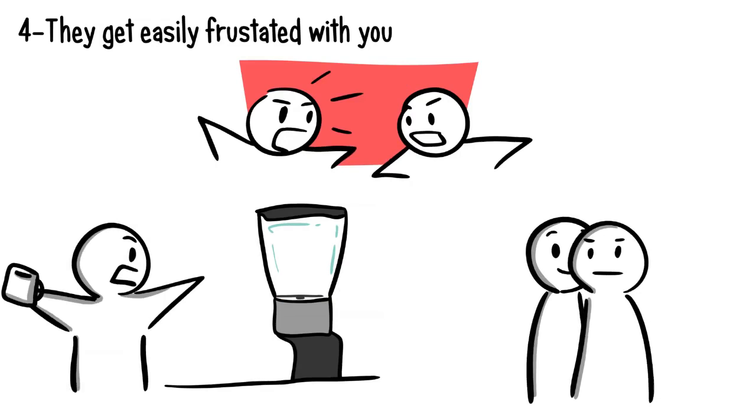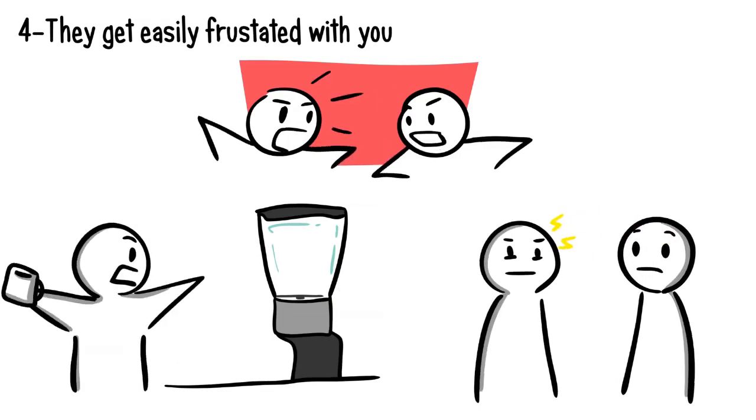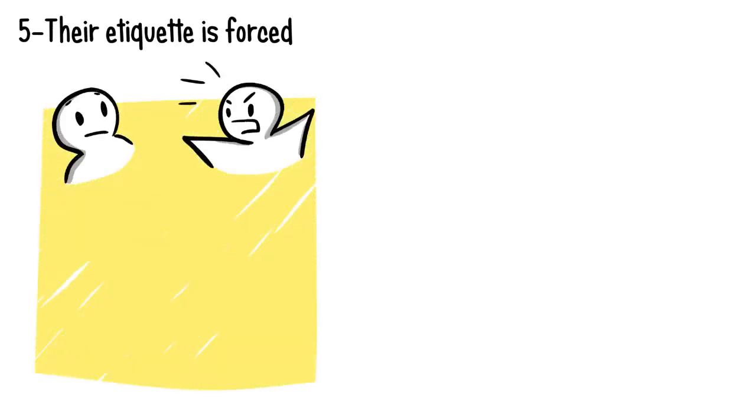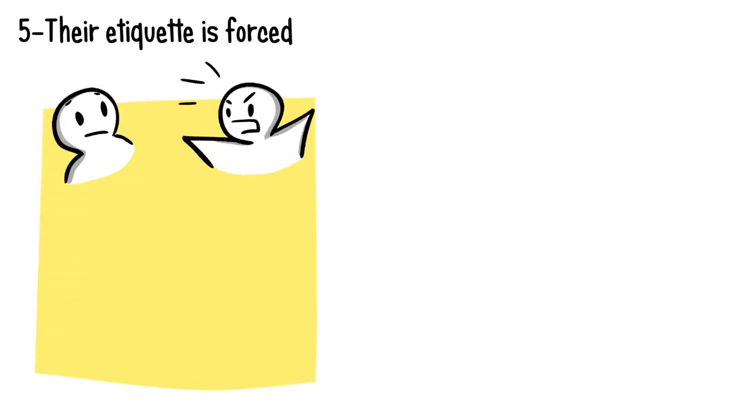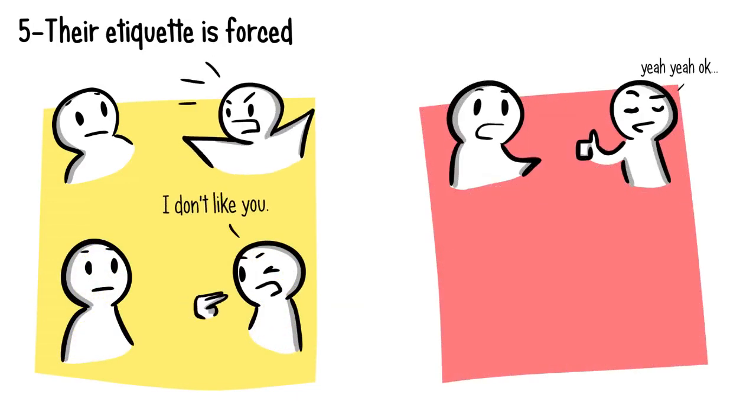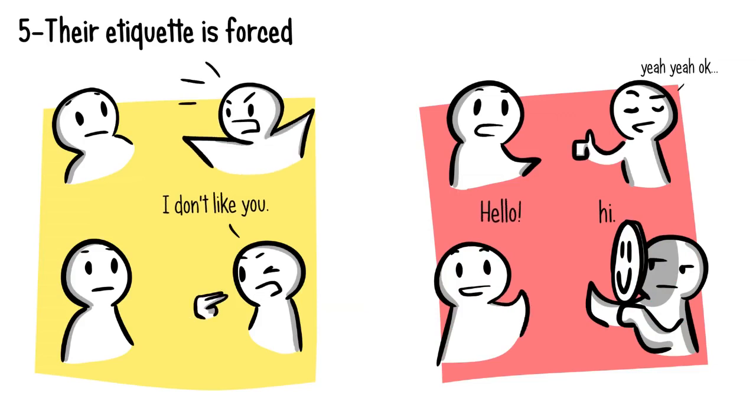Number five: their etiquette is forced. When someone outwardly dislikes you, they will be loud about it, whether it's lashing out on you regularly or telling you to your face. When they secretly dislike you however, they might try to get along just to avoid conflict. Whether it means forcing a smile or doing things to keep the peace, they will keep the surface clean between you two. Deep down though, they may think ill of you and display this through their passive aggressive behavior.